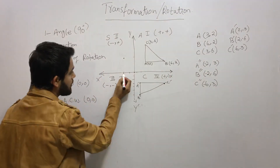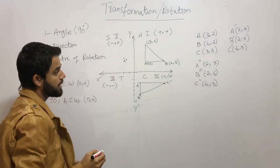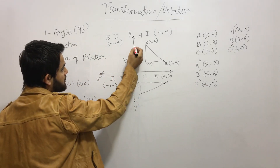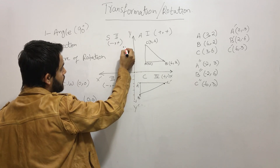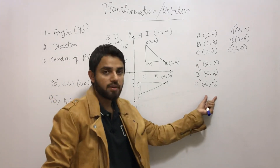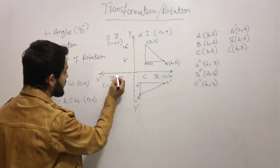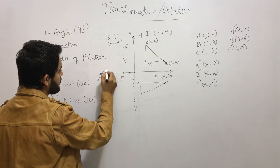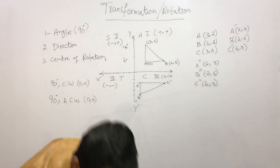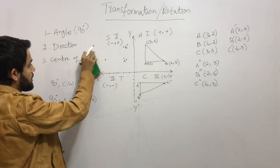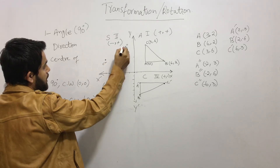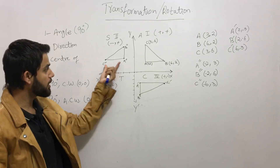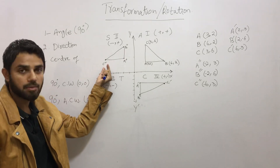So A double prime is (-2, 3). B double prime is (-2, 6). C double prime is (-6, 3). Join all three points and here we have the rotated triangle. We now have A double prime, B double prime, and C double prime, showing the 90 degree anti-clockwise rotation.